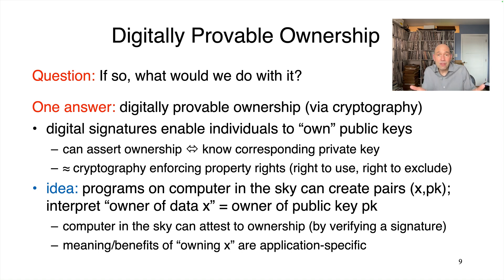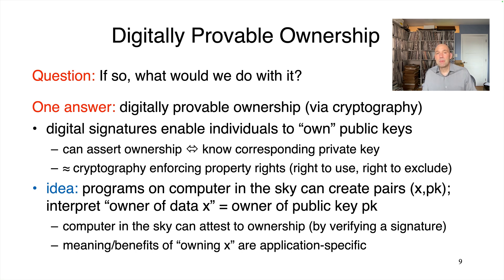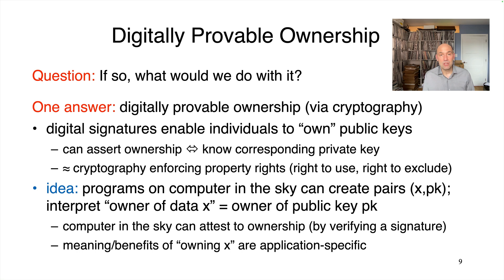Utility for x could also depend on things that have nothing to do with the computer in the sky at all — it could depend on interactions with the outside world. Maybe a good example would be: x could be an NFT, maybe one of a limited edition minted by some famous musician. Maybe there's a special gated Discord server where the musician interacts directly with just a small group of super fans, and you get access to that server if and only if you own one of those limited edition NFTs — own in the sense that ownership is attested to by this computer in the sky.